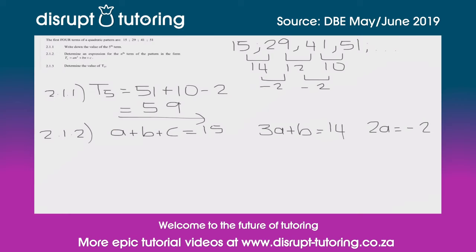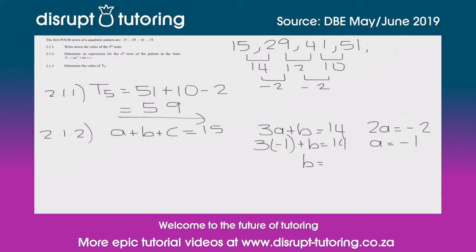Finally, 2a equals the common second difference, which is minus 2. So a equals minus 1. Plugging that into 3a + b = 14: minus 3 plus b equals 14, so b equals 17. Then plugging a and b into a + b + c = 15: minus 1 plus 17 plus c equals 15, so c equals 15 minus 16, which is minus 1.